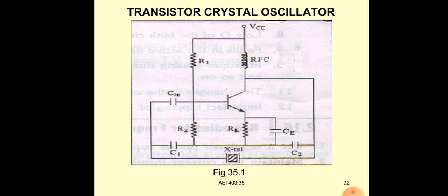Base current increases, IC current increases, and VC voltage decreases. The series and parallel components network produces a 180 degrees phase shift, and the circuit also produces a 180 degrees phase shift — total 360 degrees. The feedback voltage is in phase with the input voltage, so the loop gain is 1.